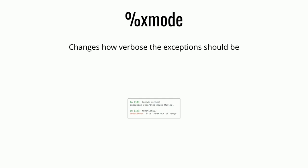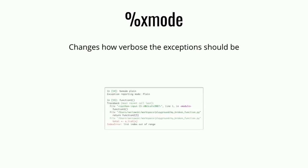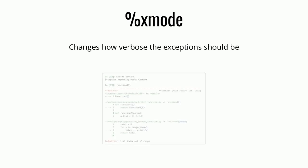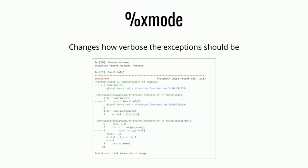IPython has four different settings for how verbose exceptions should be, and you can switch between them with the xmode magic function. You can select the lowest amount of information, a bit more verbose, context — which is the default — and the most verbose, which will also show you the local and global variables for each point in your stack trace.